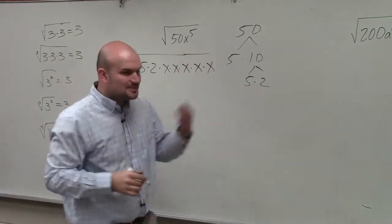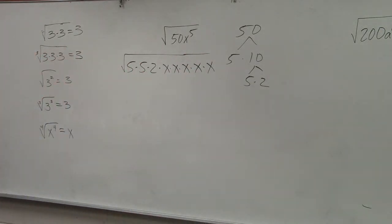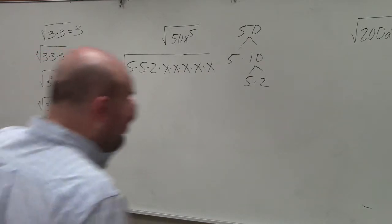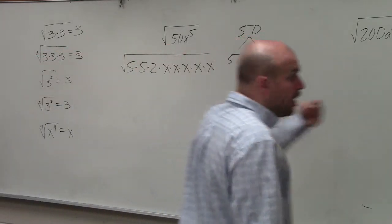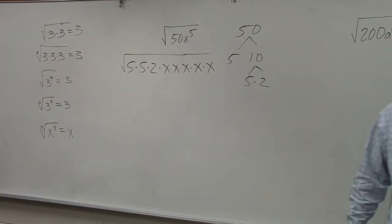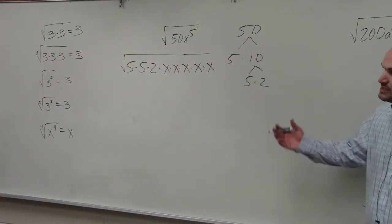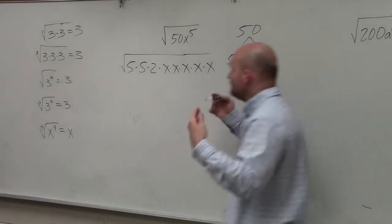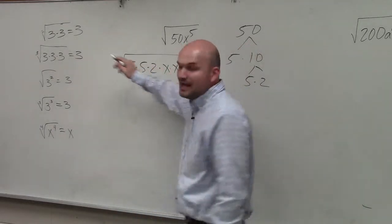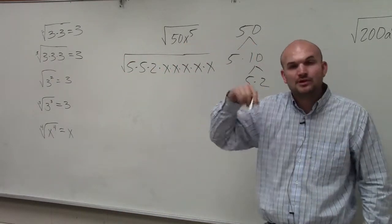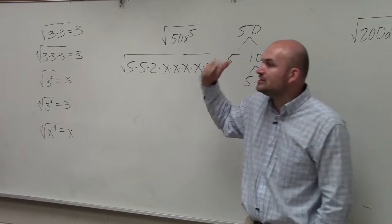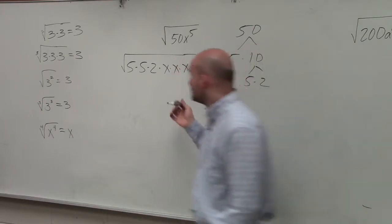Now, this is what I call kind of like the easier method. It does sometimes take a while. Now, for a small and easy problem like this, it's not going to really take that long. However, for larger problems, it might be a little bit more difficult to use this method. But what's nice about this is you guys can physically see, if I'm taking the square root, that I'm looking for pairs of numbers, numbers multiplied by themselves.